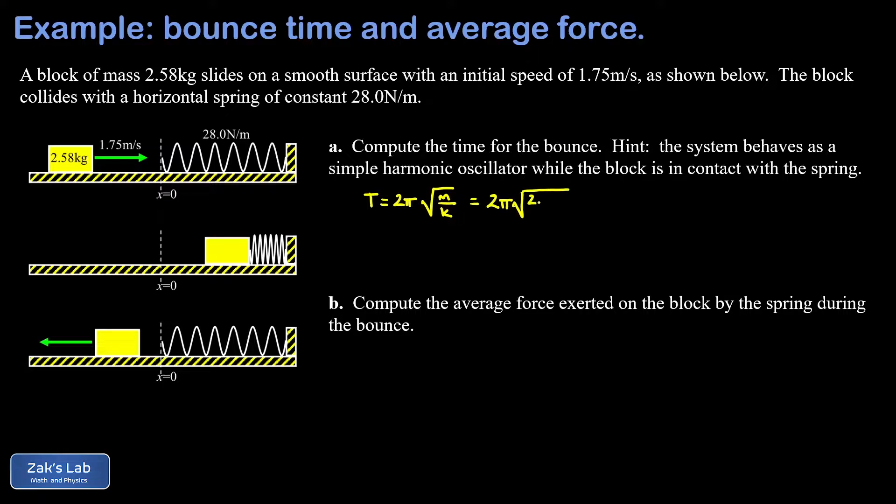We plug in the numbers: the block had a mass of 2.58 kilograms and the spring constant was given to us as 28 newtons per meter. When we run the numbers on this we get a period of 1.907 seconds. That would be the time for one full oscillation of a simple harmonic oscillator.